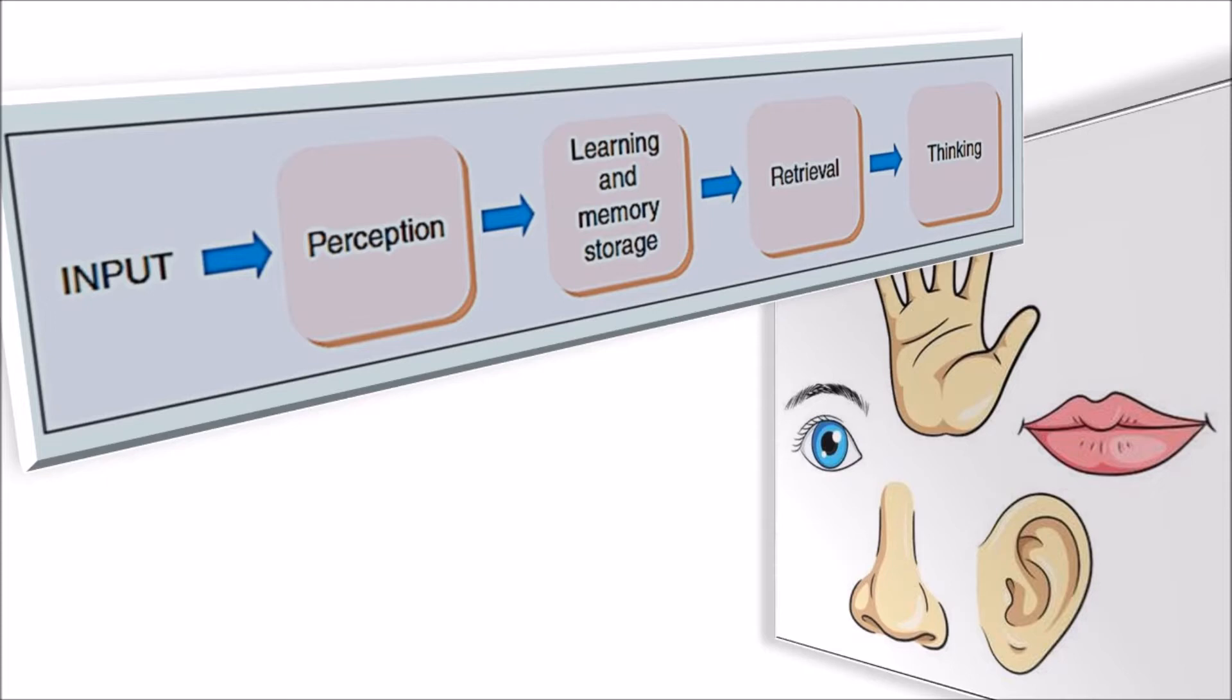Information taken in by the sense organs goes through an initial stage of perception, which involves the analysis of its content. Even at this early stage of processing, the brain is already extracting meaning from the input in an effort to make sense of the information it contains.